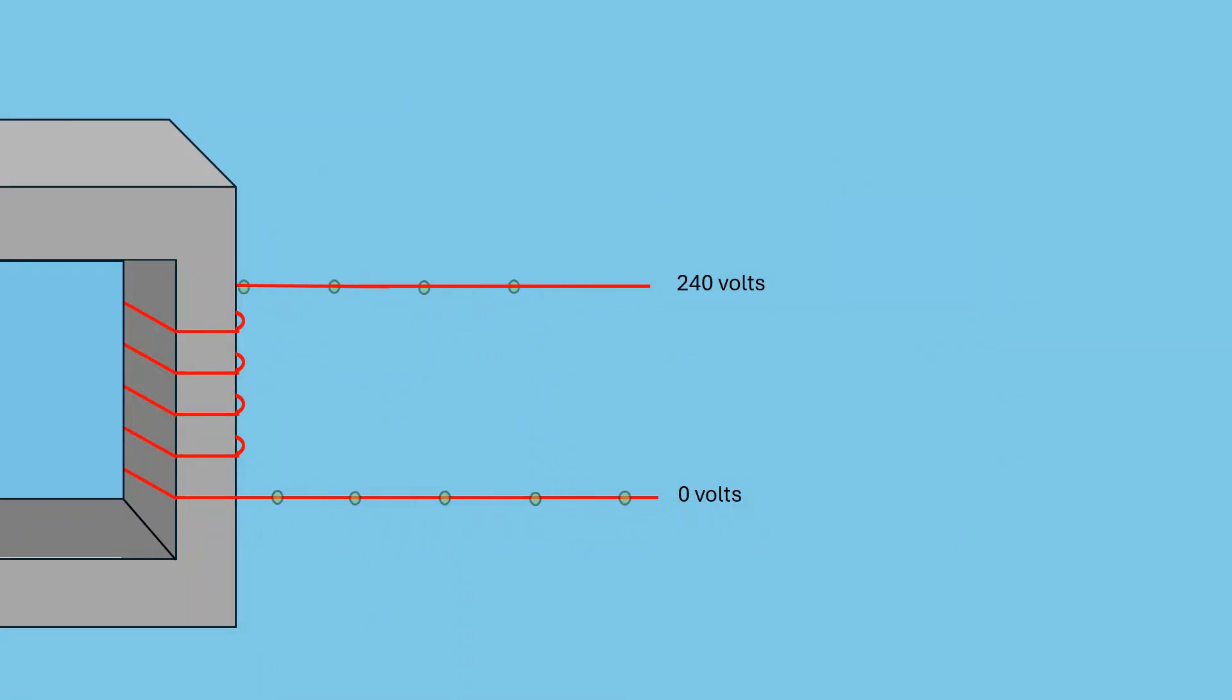Now let's zoom in on a typical 240 volt transformer. One side is at zero volts and the other side is at 240 volts. Now voltage is relative, meaning it's always measured compared to something else. If we connect something across both legs of the transformer, we get 240 volts. This is how large appliances like ovens and clothes dryers are powered.